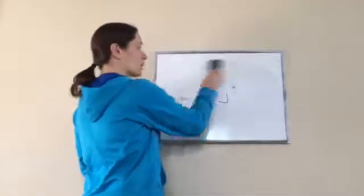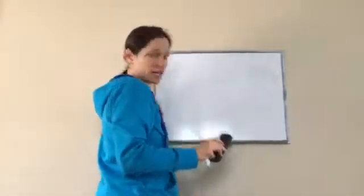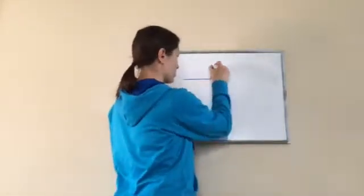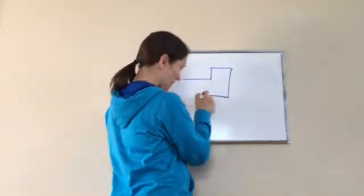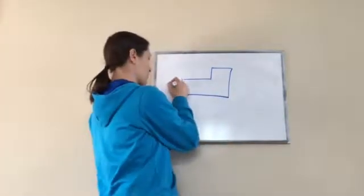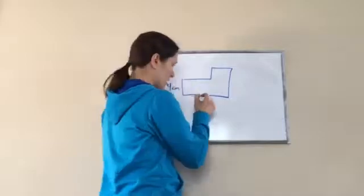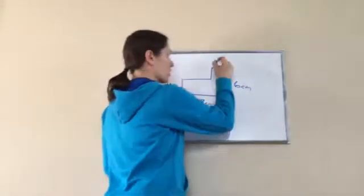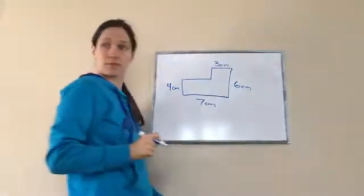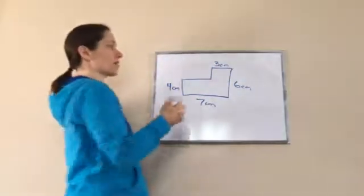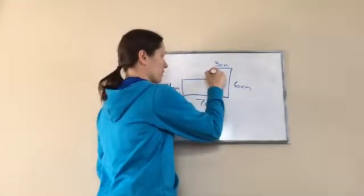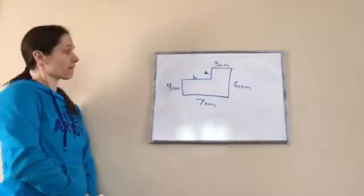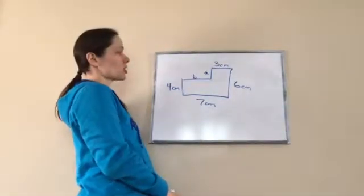Now we're doing perimeter of complex shapes, complex meaning more difficult. So let me draw a picture. This one says four centimeters, seven centimeters, six centimeters, three centimeters. But we don't know this one which we're going to label a, and we don't know this one which we're going to label b.